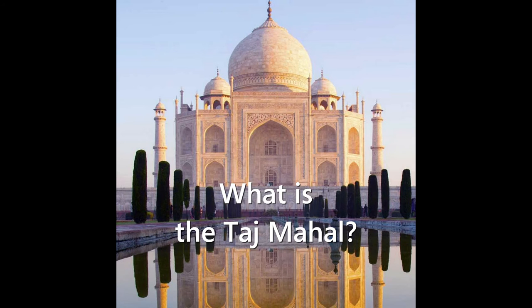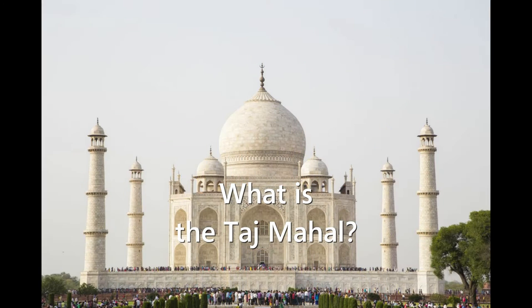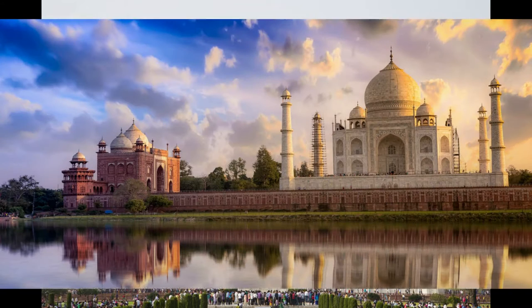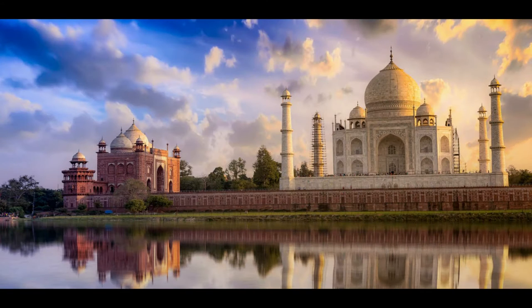The Taj Mahal was commissioned by Shah Jahan in 1631, to be built in the memory of his wife Mumtaz Mahal. Construction started in 1632, and the mausoleum was completed in 1648. The surrounding buildings and garden were finished five years later.